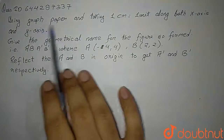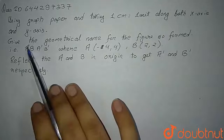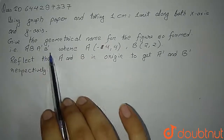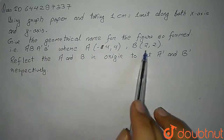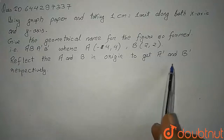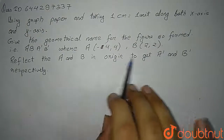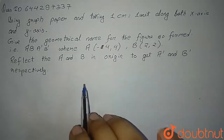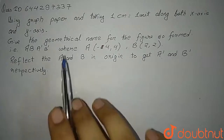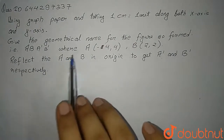The question is: using graph paper and taking one centimeter equal to one unit along both x-axis and y-axis, give the geometrical name for the figure formed — that is A, B, A', B' — where A is (-4, 4) and B is (2, 2). Reflect A and B in the origin to get A' and B' respectively. We have to reflect these two points in the origin, join all the points, and name the figure.